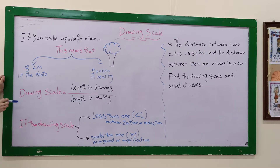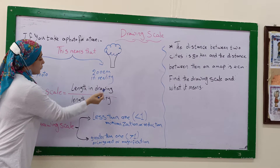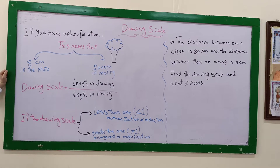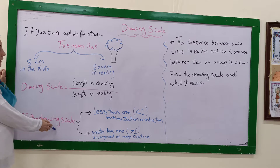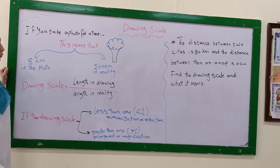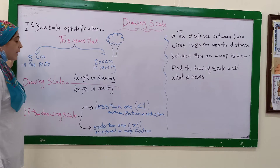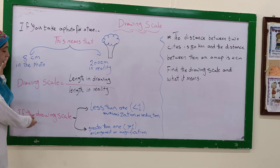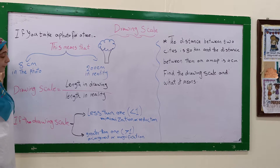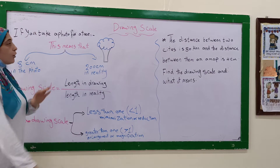So our rule is: drawing scale equals length in drawing divided by length in reality. Notice that if the drawing scale is less than 1, it refers to minimization or reduction. But if the drawing scale is greater than 1, it refers to enlargement or magnification.